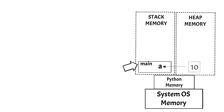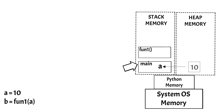Let us move forward. Say for example, we created a function called fun1 which accepts A as the argument, and we are invoking that function as B equals fun1, passing the argument A. When this code is executed, a new stack is created in the stack memory for function1. Now the state of variables A and B will be maintained in the main stack, and the state of function1 will be maintained in the function1 stack.